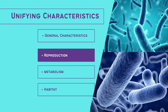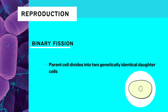Next, we're going to talk about the reproduction of Archaea. Archaea can reproduce through binary fission, where a parent cell divides into two genetically identical daughter cells. Archaea can also reproduce asexually through budding and fragmentation, where pieces of the cell break off and form a new cell, also producing genetically identical organisms.